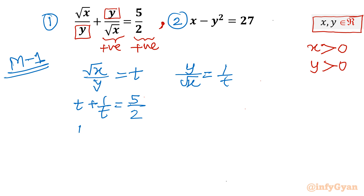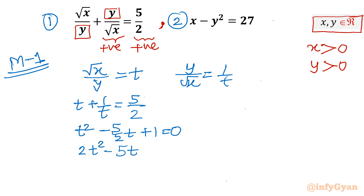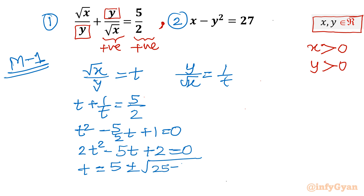Taking LCM, we get t squared minus 5 over 2 times t plus 1 equal to 0. Multiplying by 2 gives 2t squared minus 5t plus 2 equal to 0. Let's apply the quadratic formula: t equals minus b plus or minus root of b squared minus 4ac, all divided by 2a.